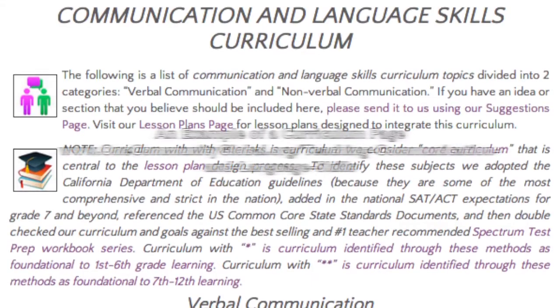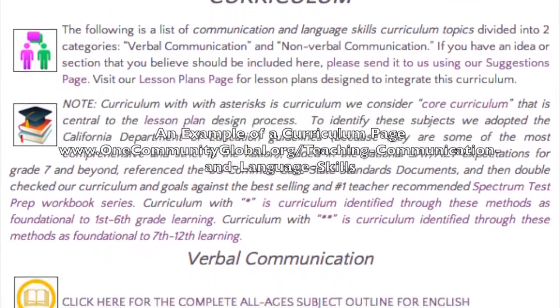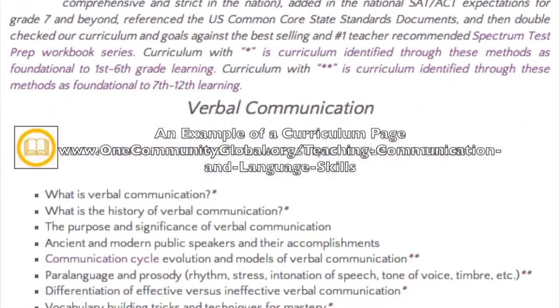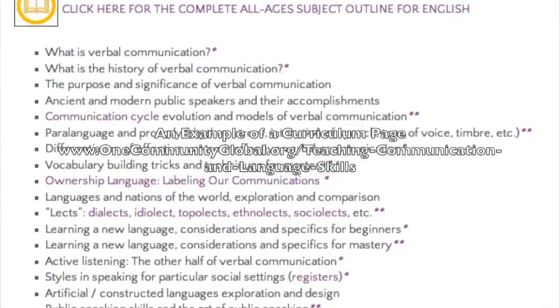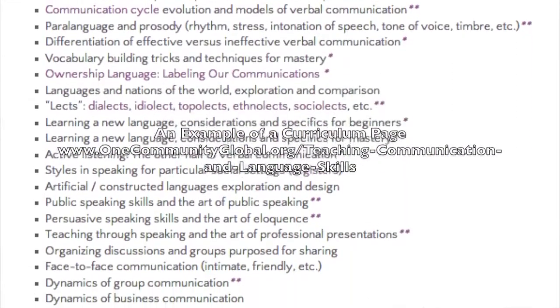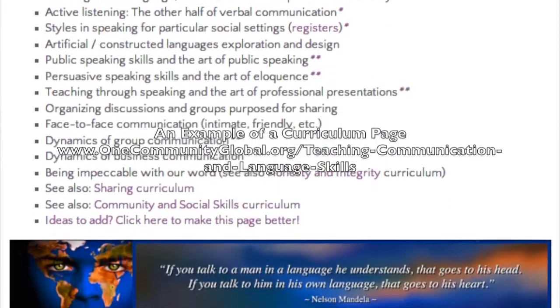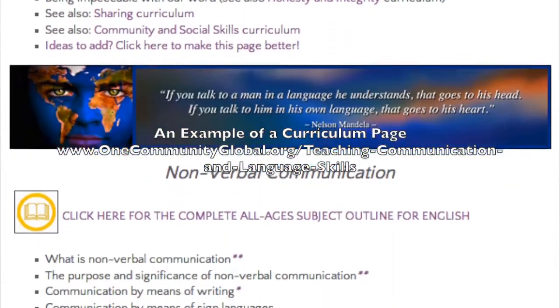We're going to make sure subjects are also represented in much more depth in the subject pages. Now if you go to any of the curriculum pages, you'll see asterisks for grades one through six and double asterisks for grades seven and beyond, indicating a core curriculum item identified through US core standards, California Department of Education, or ACT/SAT. If you cover these things, you're really covering the foundations. Cross-referencing all that was a huge chunk of work and a lot of effort, but totally worth it.